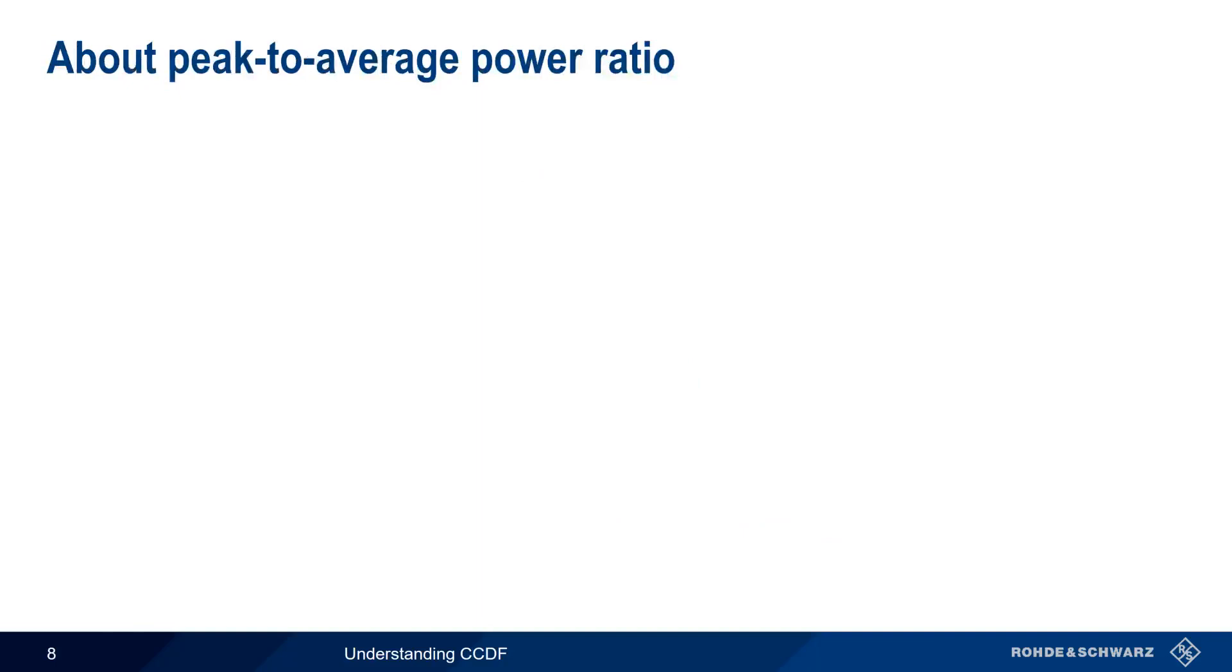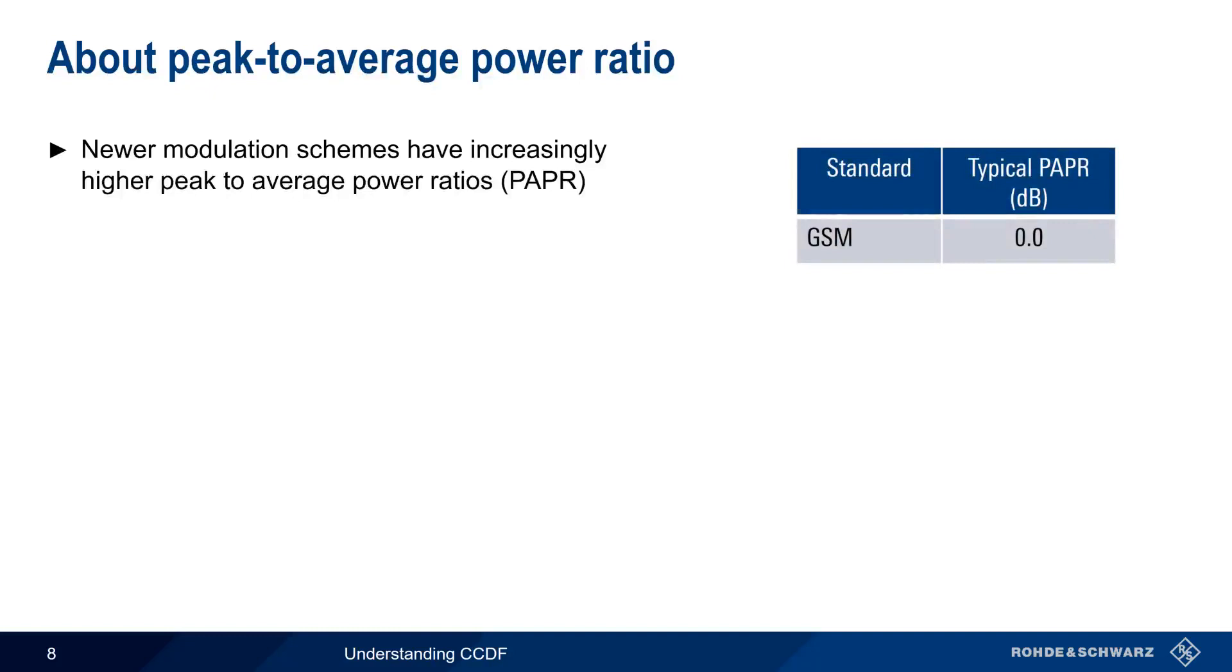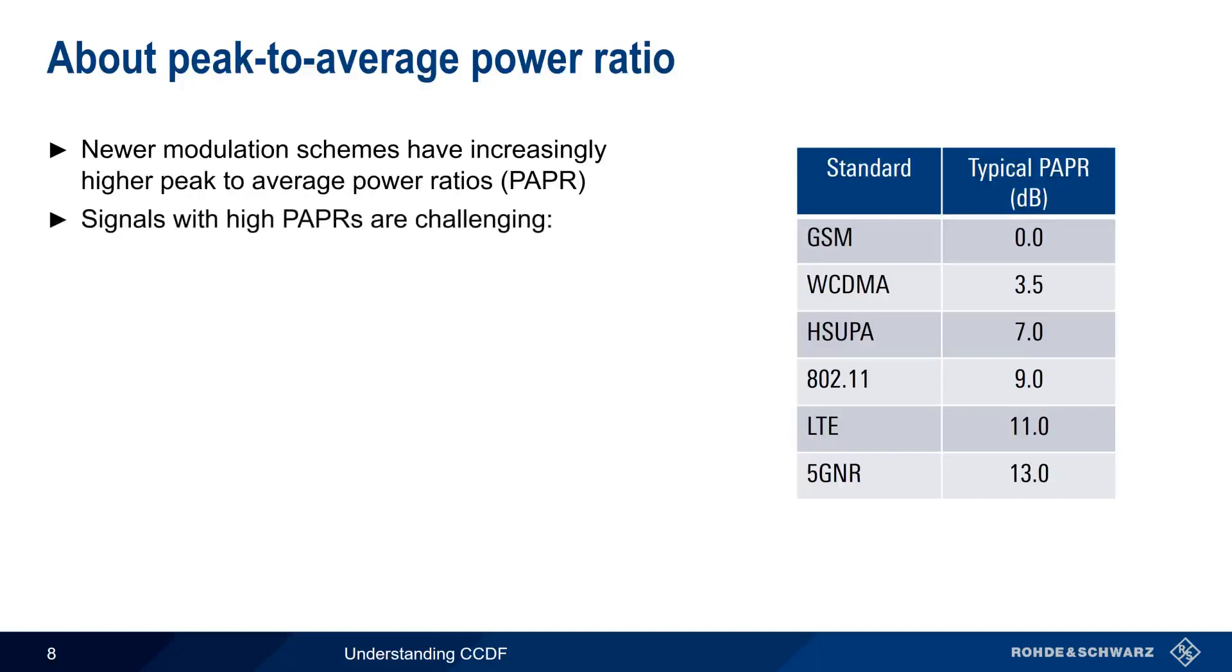Why is peak to average power ratio important? Over the last couple of decades, the peak to average power ratio of common modulation types has been steadily increasing. For example, GSM or 2G had a zero peak to average power ratio, but each new generation of cellular or wireless technology has had an increase in its peak to average ratio. This creates non-trivial challenges for device designers, because signals with high peak to average ratios require things like a high dynamic range in analog to digital converters, or highly linear amplifiers with high peak power capability.